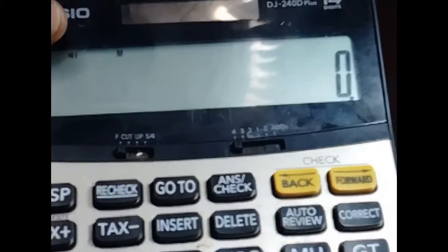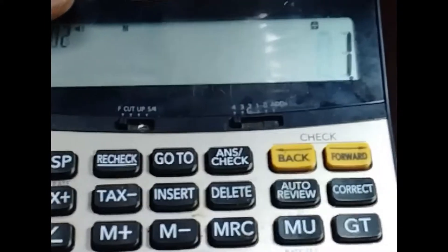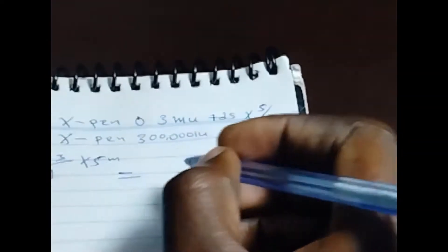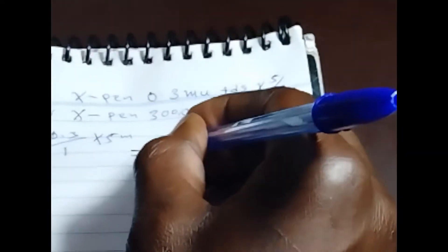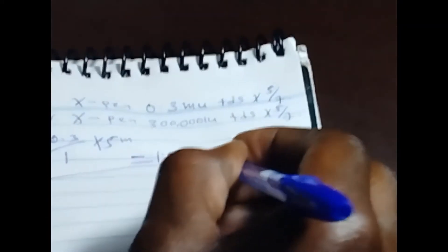So this one is 0.3 divided by one times five. Yes, this is the mL we are going to give to the patient, is 1.5 mL. This one if we are going to use mega unit.